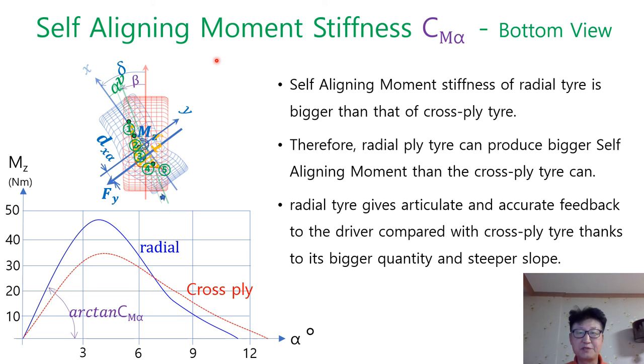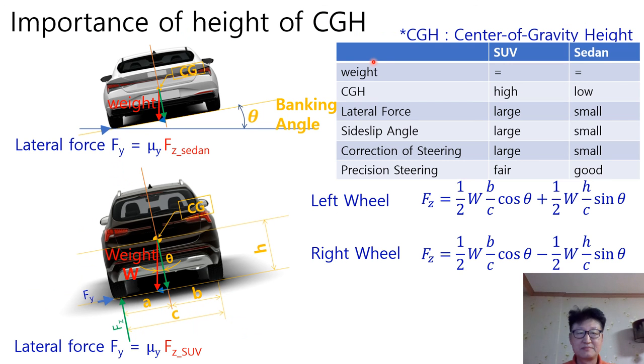If you watch the previous videos, you can easily understand upcoming videos. Recently, I explained the difference between radial tire and cross-ply tire on lateral force, self-aligning moment, pneumatic trail and steering feedback. Last week, I explained the importance of center-of-gravity height related to the driving on the banked round road. Please remind, pre-subscription makes your fast approach to brand new upcoming videos.